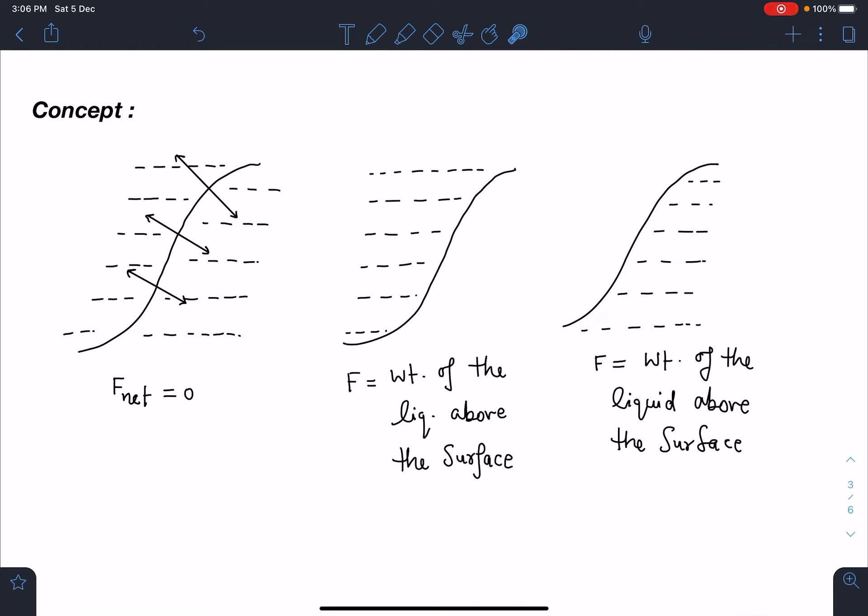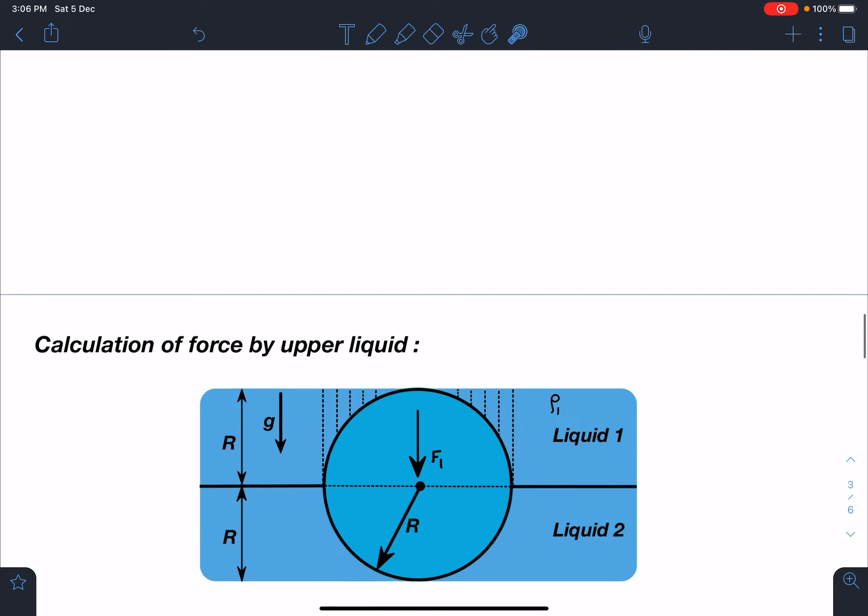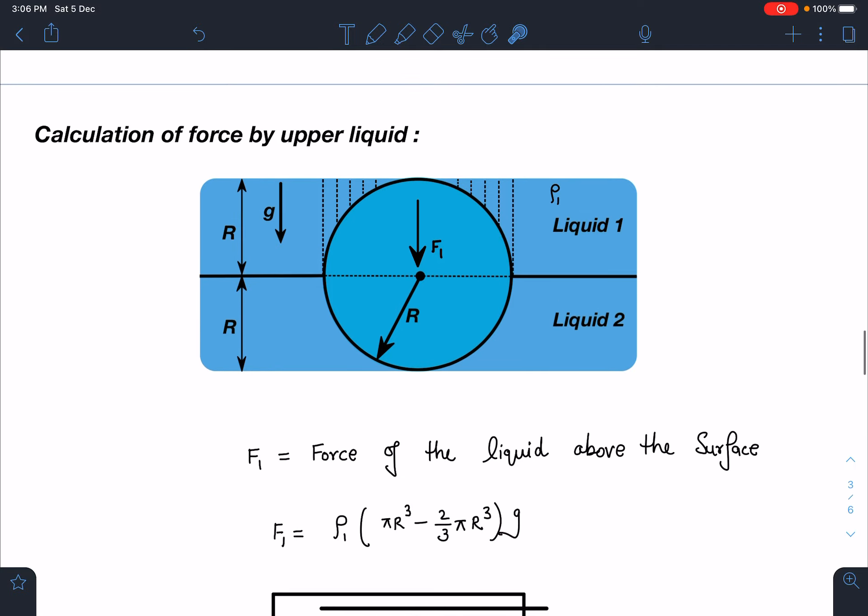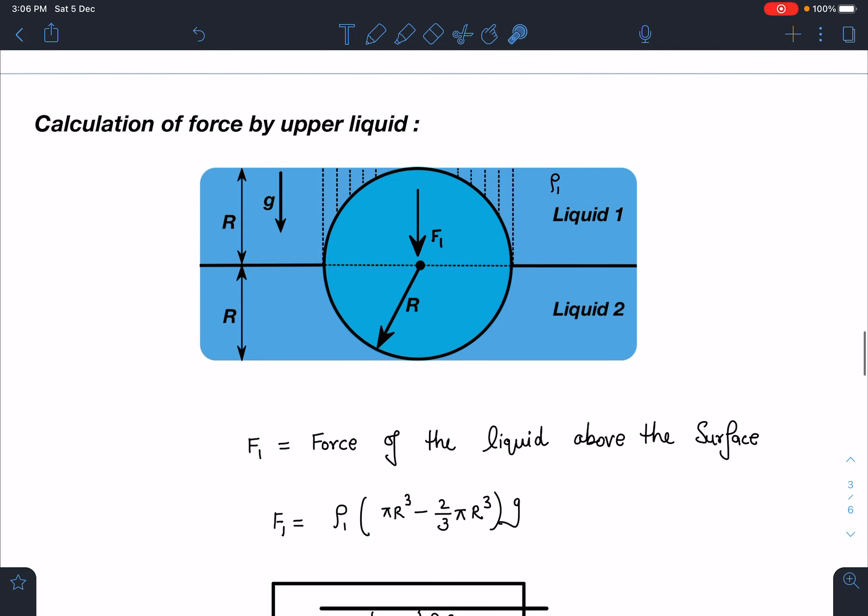In earlier problems I have used only one liquid. In this problem I'm using two different liquids. So let's do the calculation for force F1 which is force by the upper liquid. I can very easily say it is nothing but weight of the liquid above the surface.